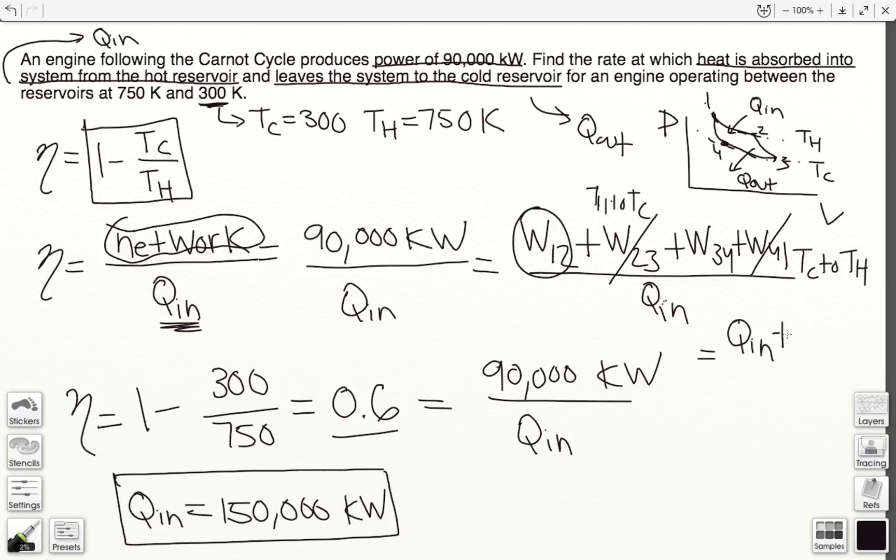So basically we'll have 1 - so now we know what our Q_in is, we know that this is equal to 0.6, so we can solve for Q_out. Our Q_out is going